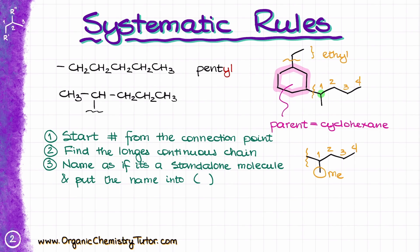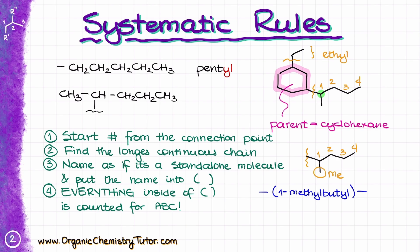That substituent is a methyl group, which means that if this were a molecule on its own, the name would be 1-methylbut- — but instead of -ane, I add the ending -yl because it is still a substituent — so it becomes (1-methylbutyl), in parentheses. Everything inside the parentheses is counted for alphabetical order, including any numeric prefixes like di, tri, tetra inside parentheses — unlike in regular naming, those also count for the alphabet. So anything inside parentheses counts.